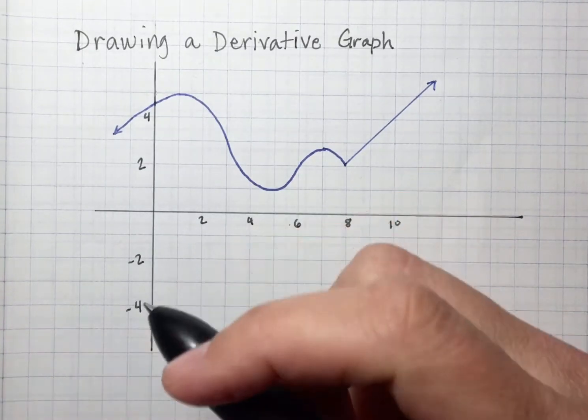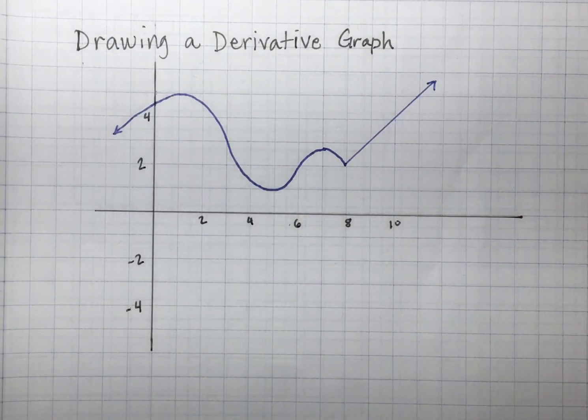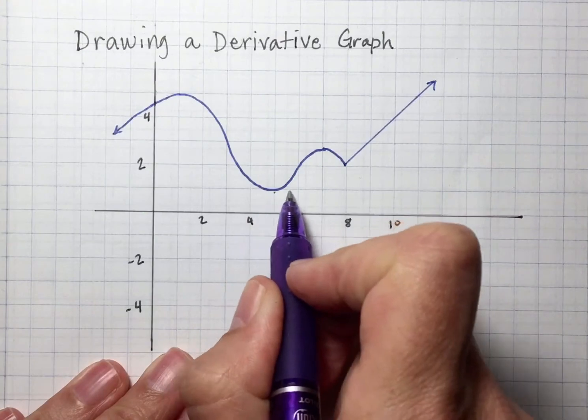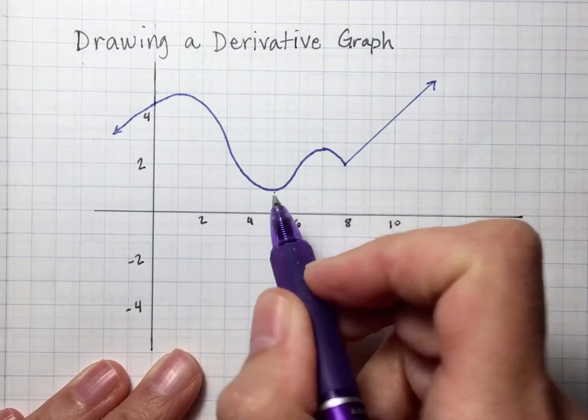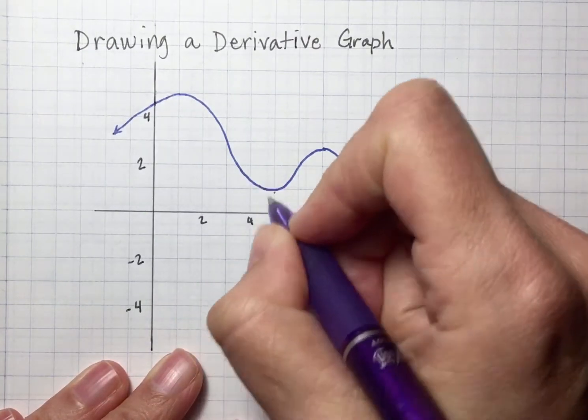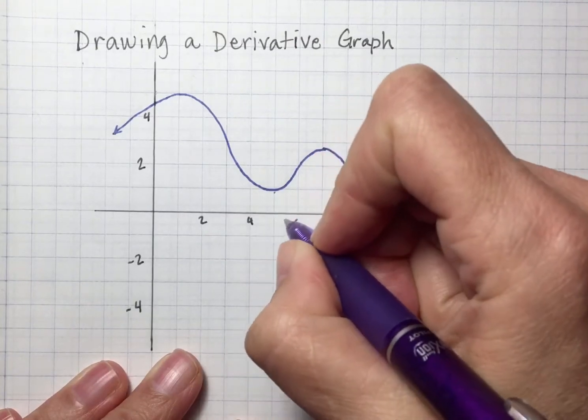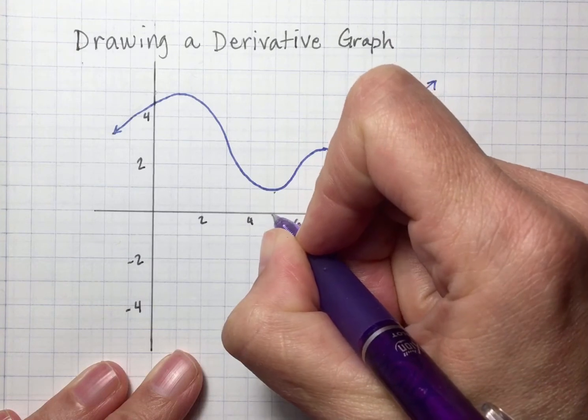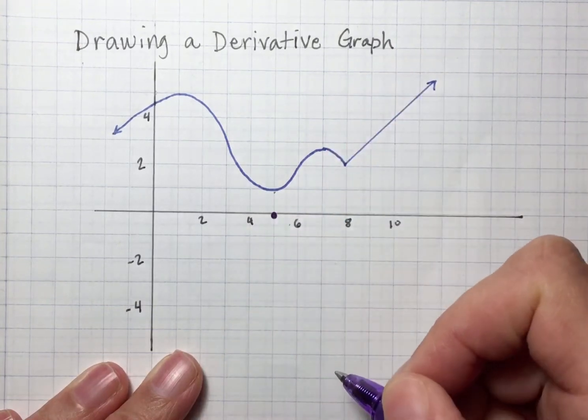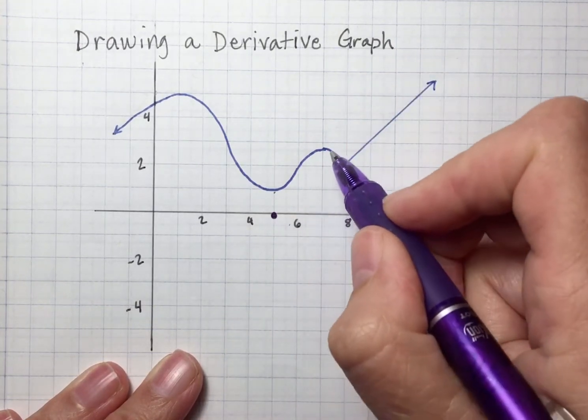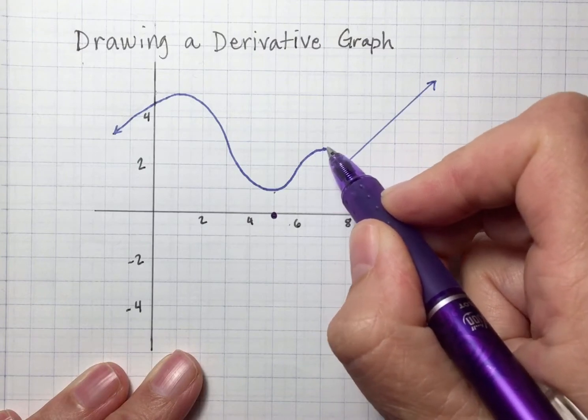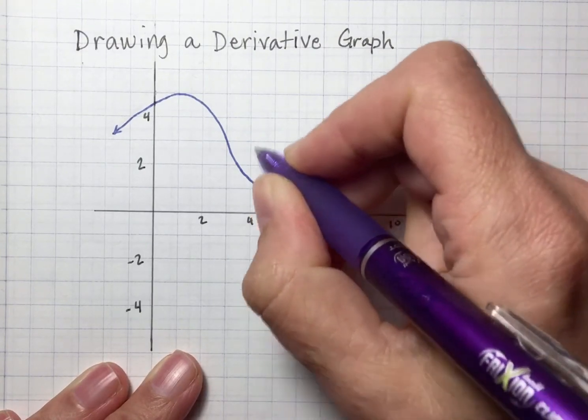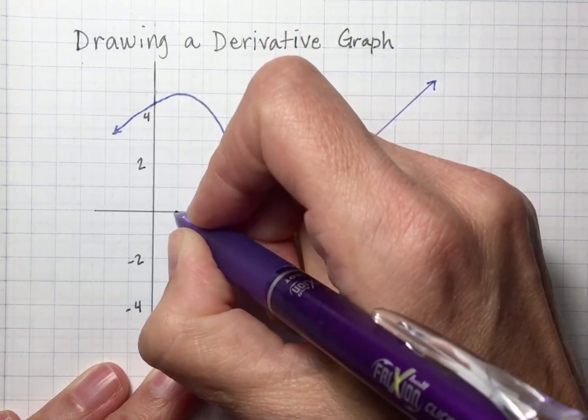I like to go for the easy stuff first. For example, at x equals 5, this thing is horizontal. If I were walking along this, that's flat ground. I'm going to skip around all over the place on this graph. So when x is 5, I have a zero slope. I can look around and see that at x equals 7 it's also flat, so I can plot that. And at x equals 1, it's flat there as well. So I know I have these three flat spots.